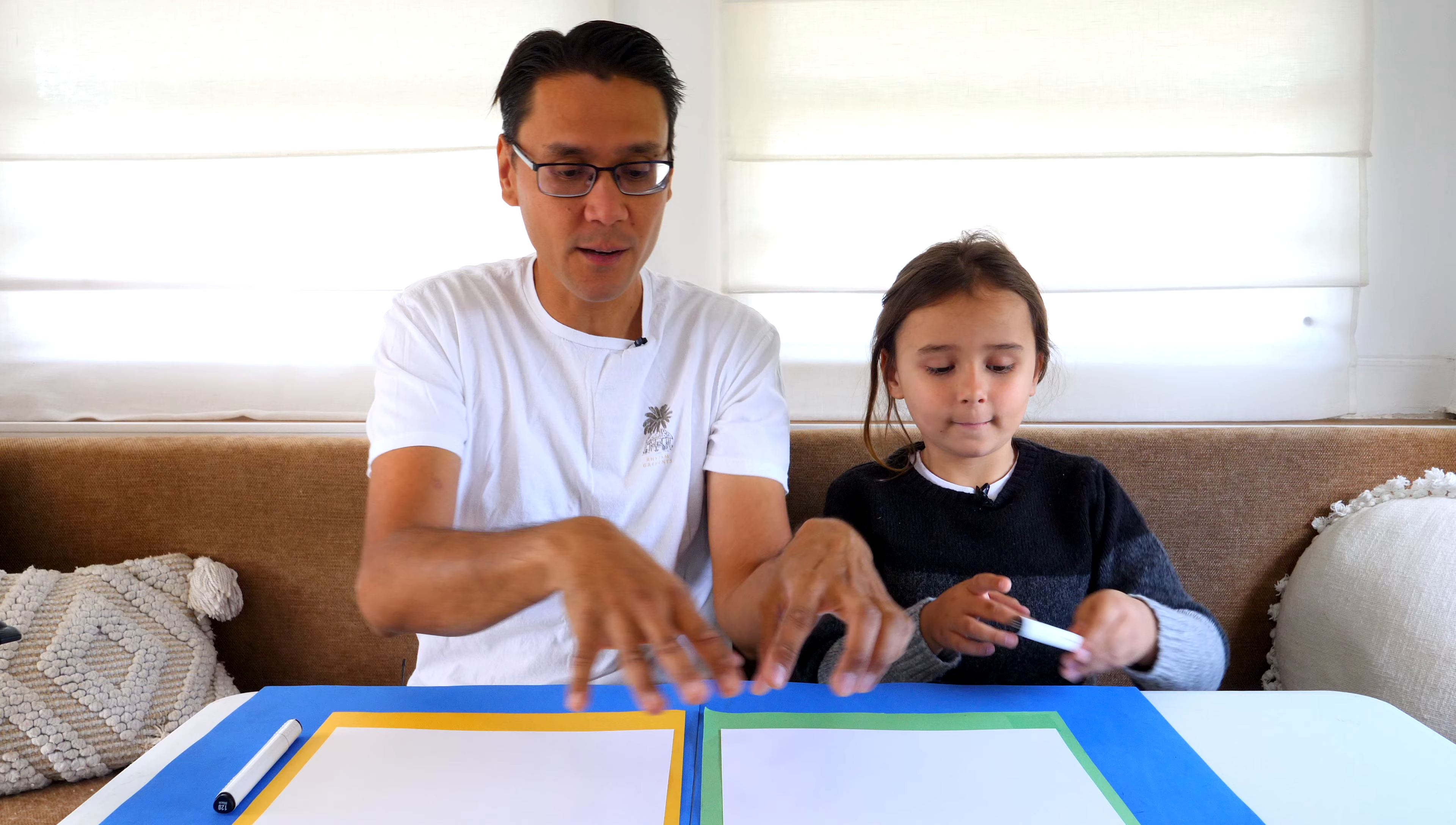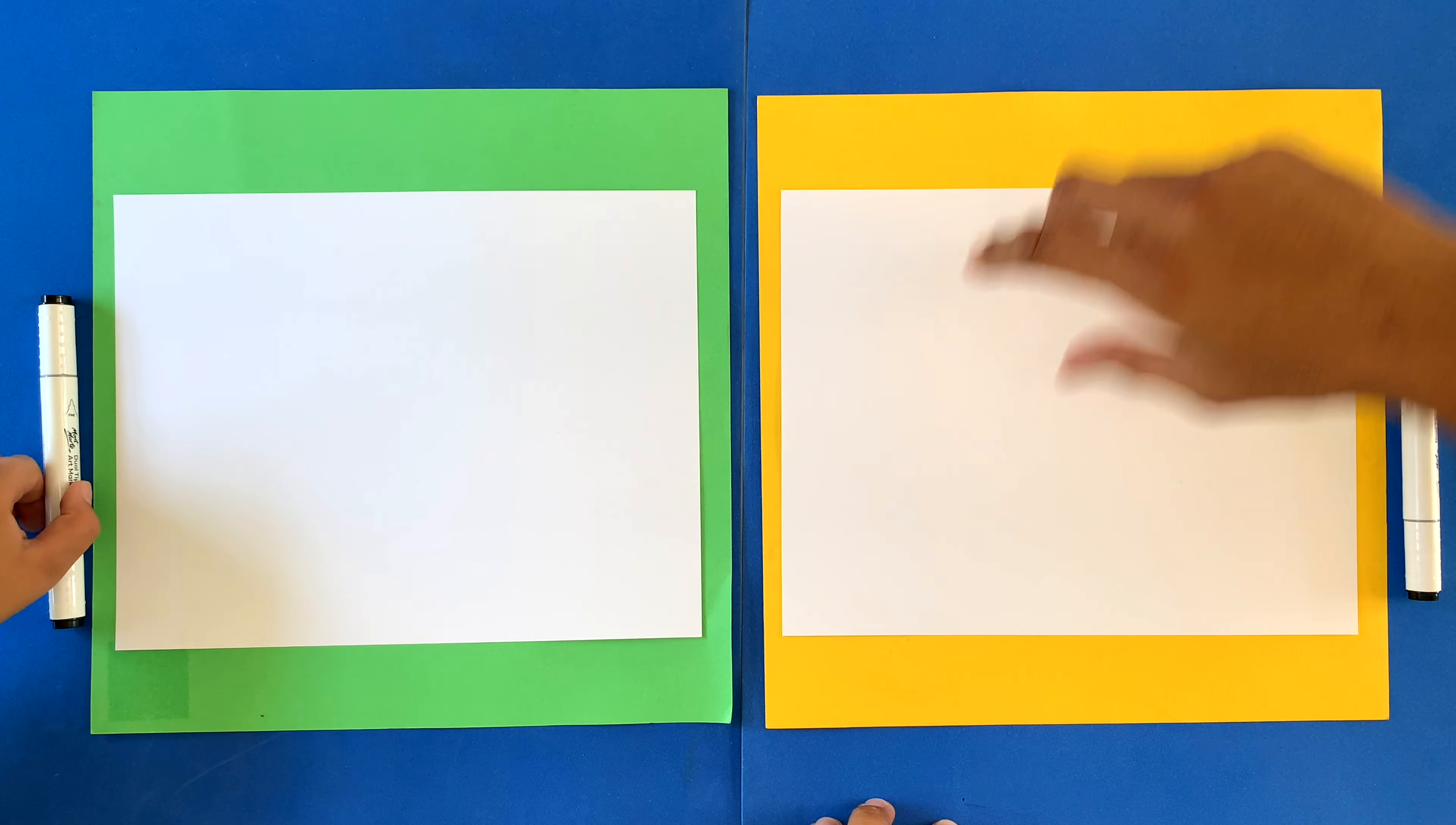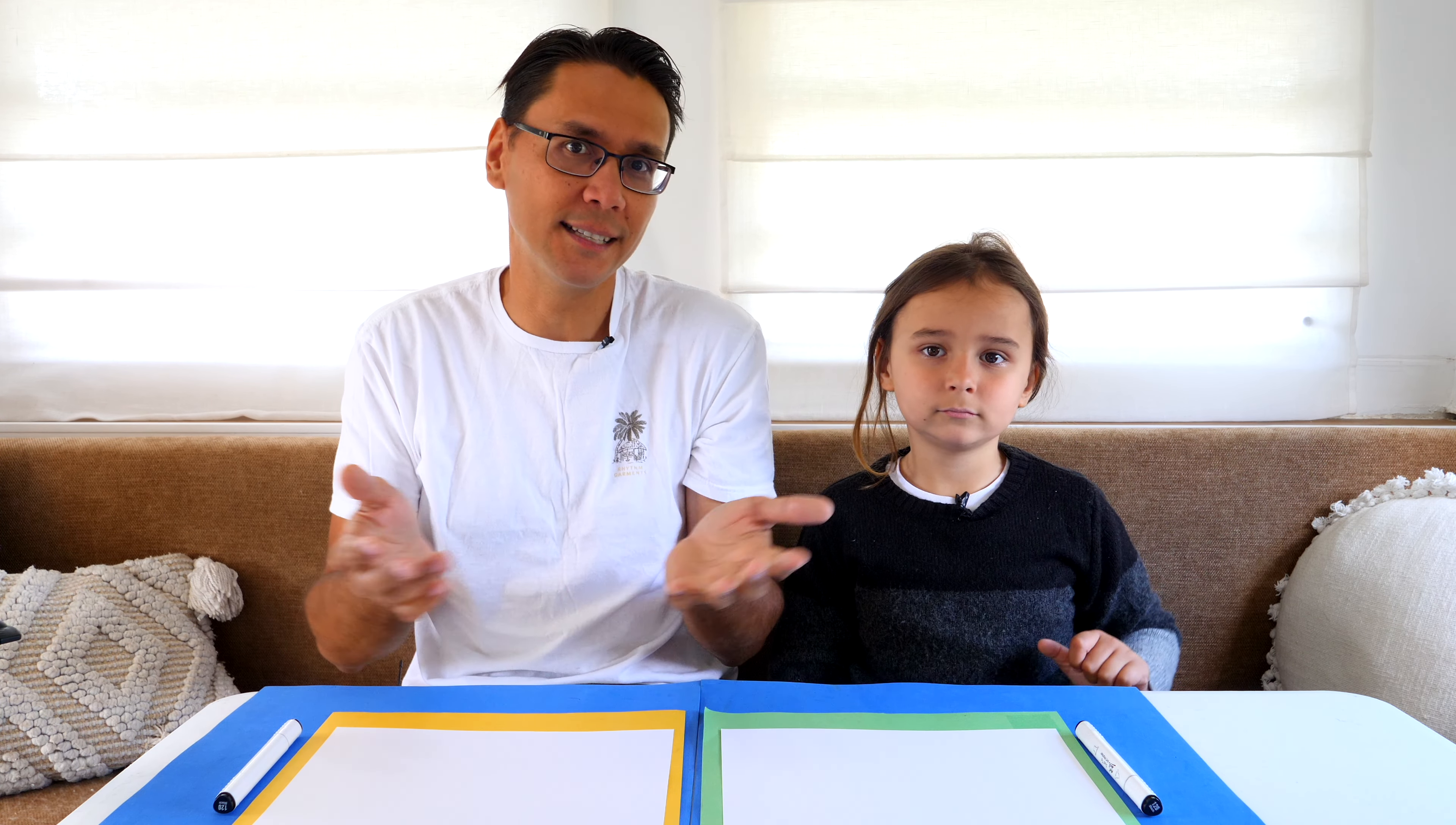So in today's show we're flipping our papers around to landscape instead of portrait. Normally we're drawing this way in the vertical but today we're going to draw in the horizontal because ADHD is quite large with his long legs and his arms and so forth. So let's get to it.